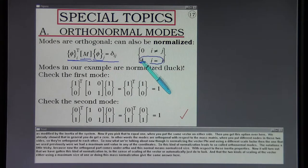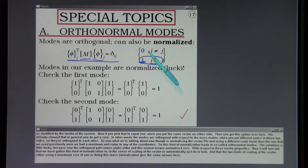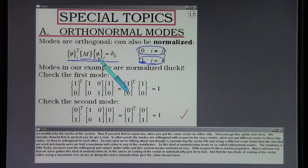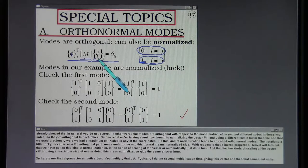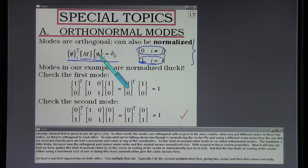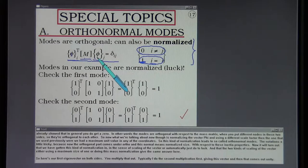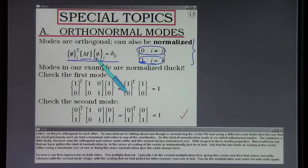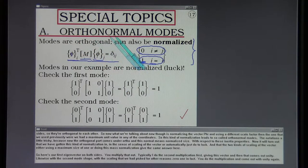If you pick that to equal one when you put the same vector on either side, then you get this option over here. We already showed that in general you do get a zero - the modes are orthogonal with respect to the mass matrix when you put different modes in these two sides. Now what we're talking about is normalizing the vector phi and using a different scale factor than the one that we used previously where we had a maximum unit value in any of the coordinates. This kind of normalization leads to so-called orthonormal modes.